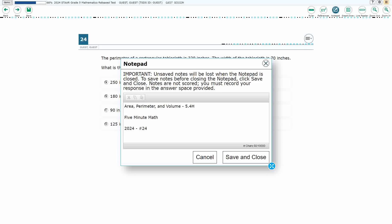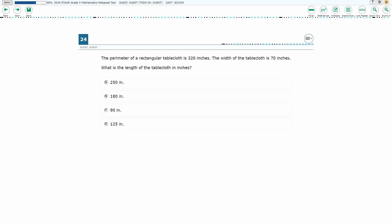Hello and welcome to 5-Minute Math. Today we are looking at the 5th grade concept of area, perimeter, and volume. This is standard 5.4H in the great state of Texas, and we are using item number 24 of the 2024 released STAAR test.